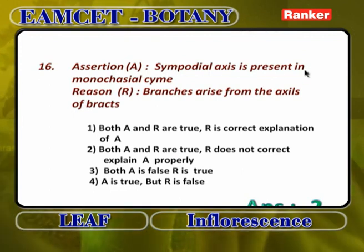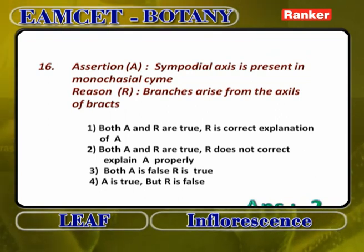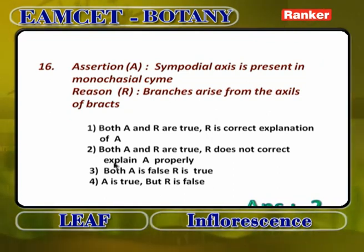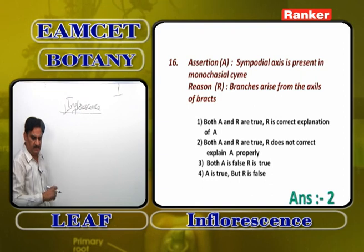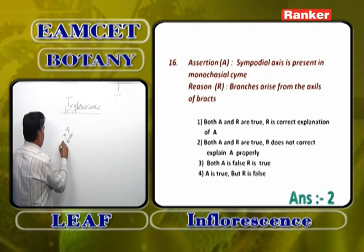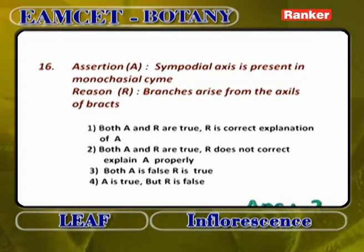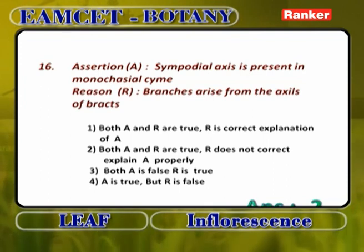Assertion: sympodial axis is present in monochasial cyme. Reason: branches arise from the axils of the bracts. The answer is 3 — A is true, R is false. Sympodial axis in monochasial cyme is correct because flowers are produced opposite to the bracts, making it a pseudo axis. However, branches do NOT arise from the axils of bracts — they arise from opposite to the bracts. So R is false.